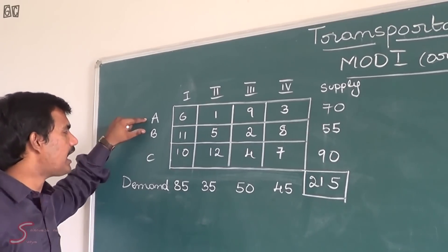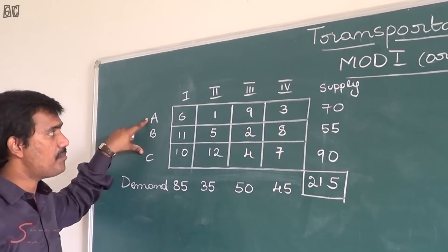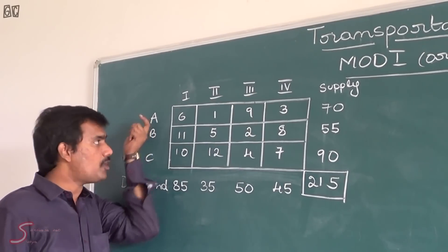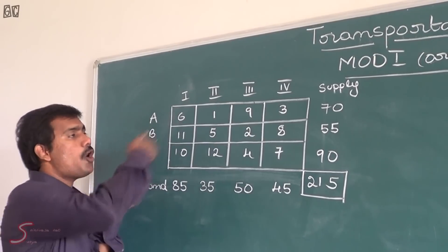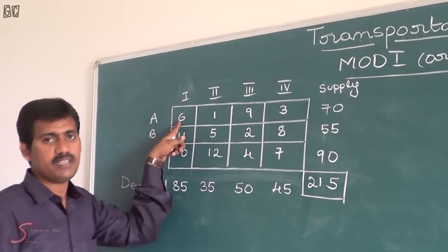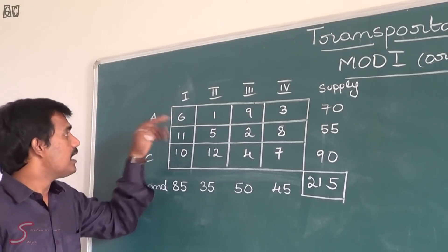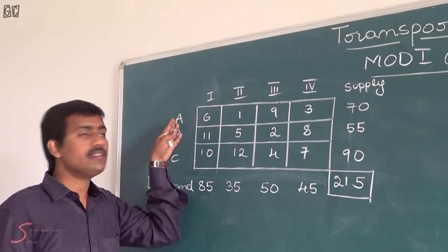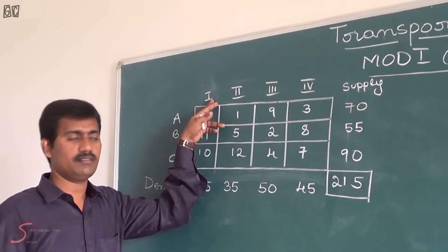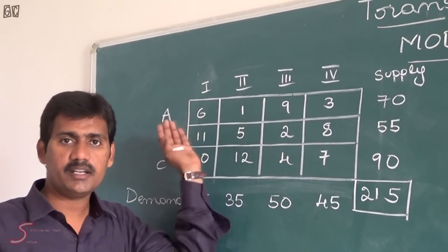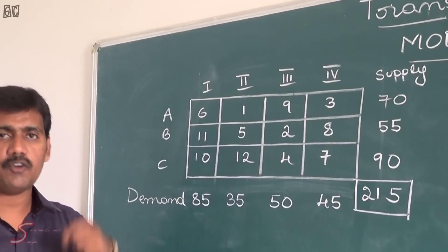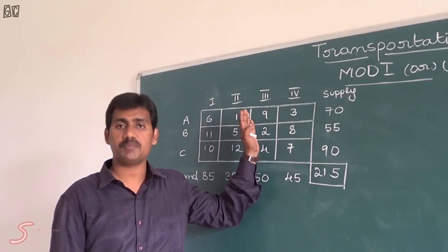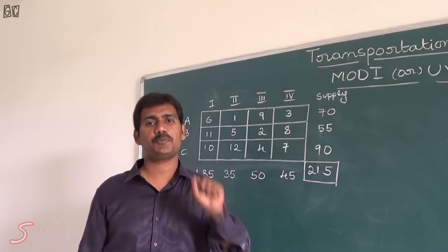We have three commodities A, B, C and we have market 1, market 2, market 3, market 4. We are going to transport all these commodities to all the markets. The minimum transportation cost is 6 rupees to transfer commodity A to market 1. In the same way this pattern repeats — we transport all three commodities to all destinations with minimum transportation cost.